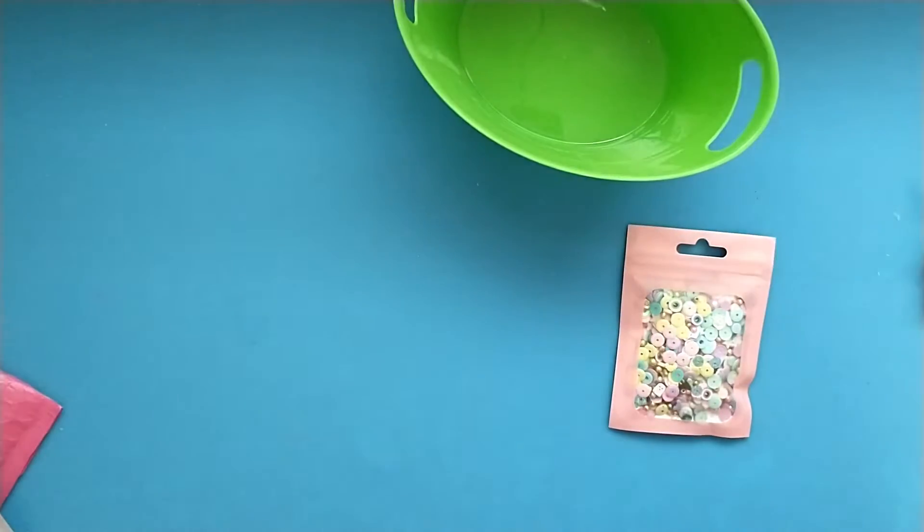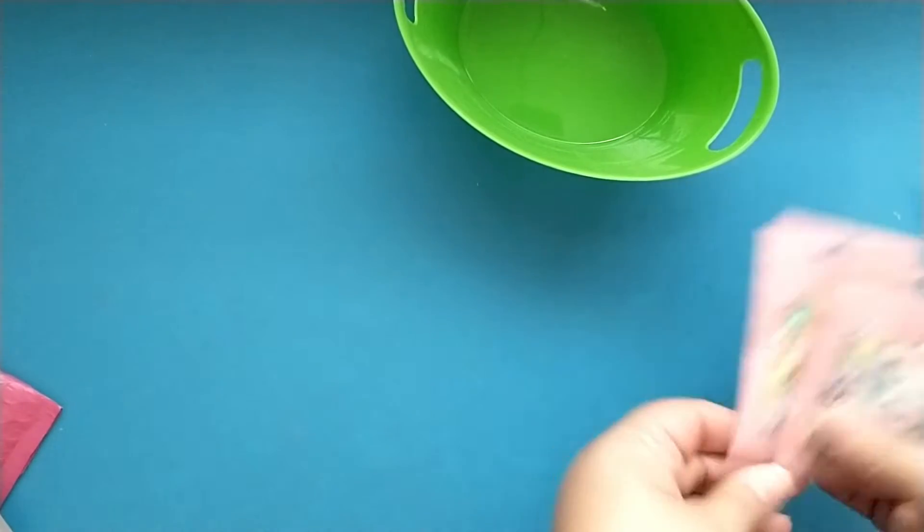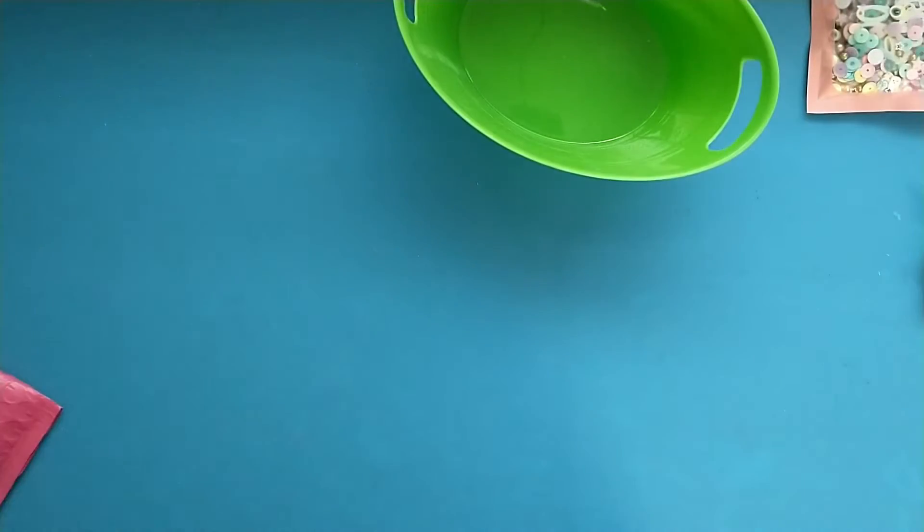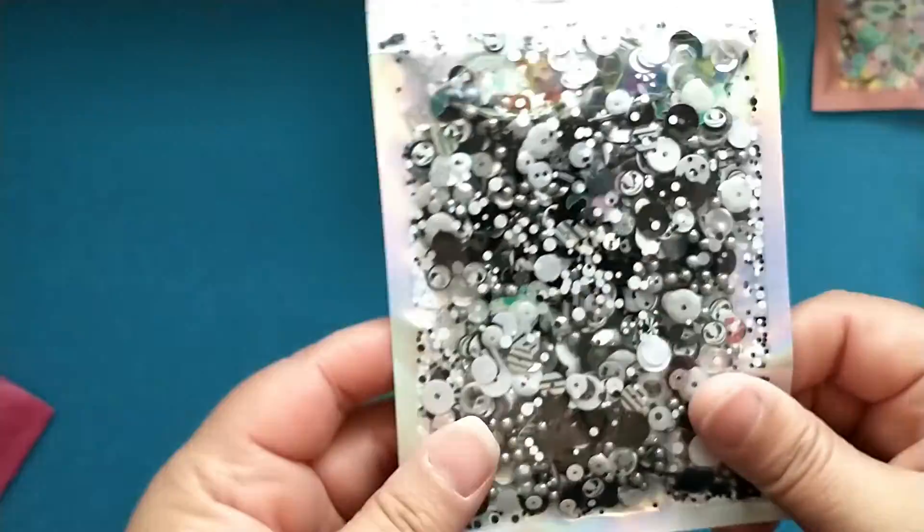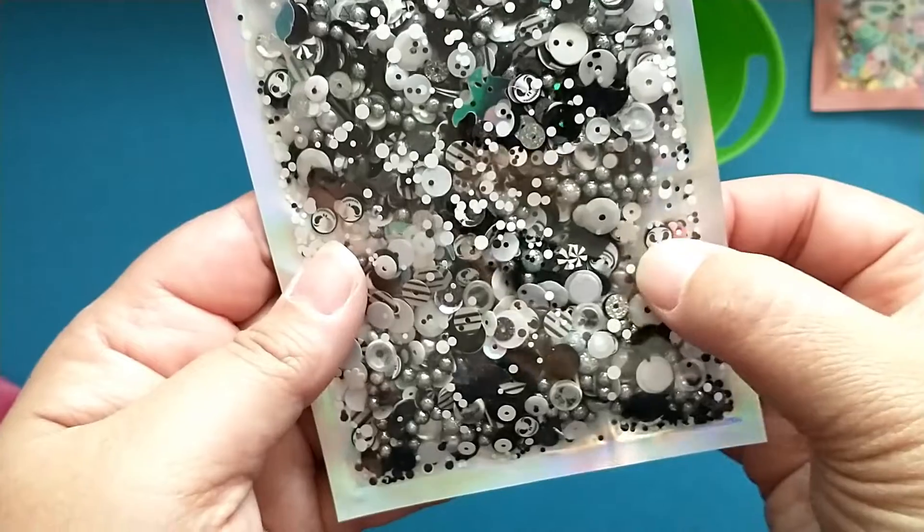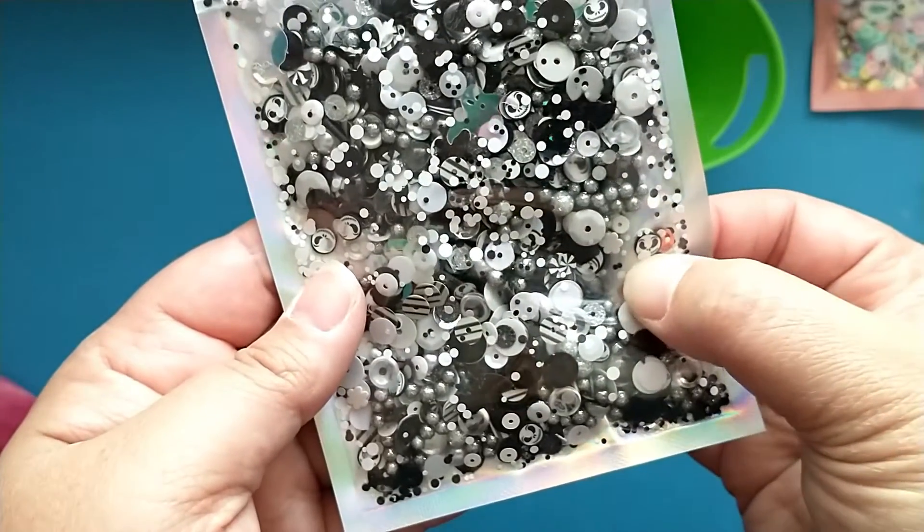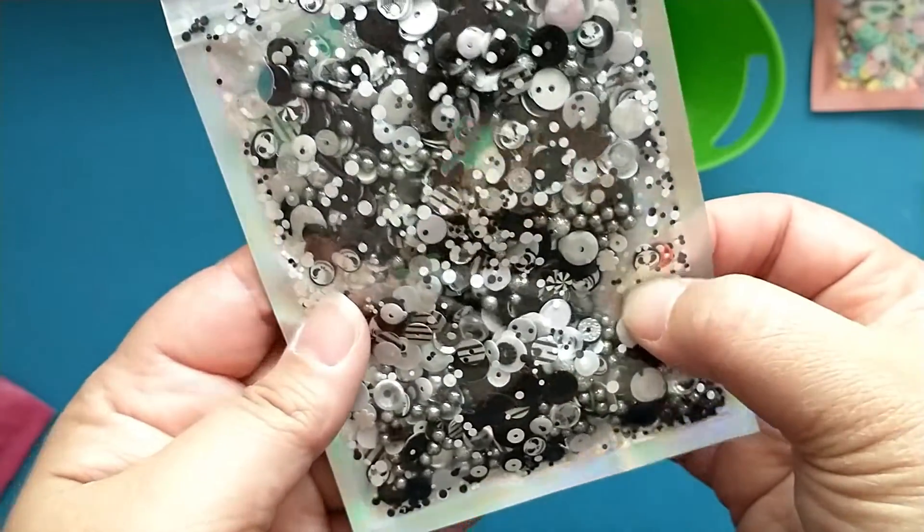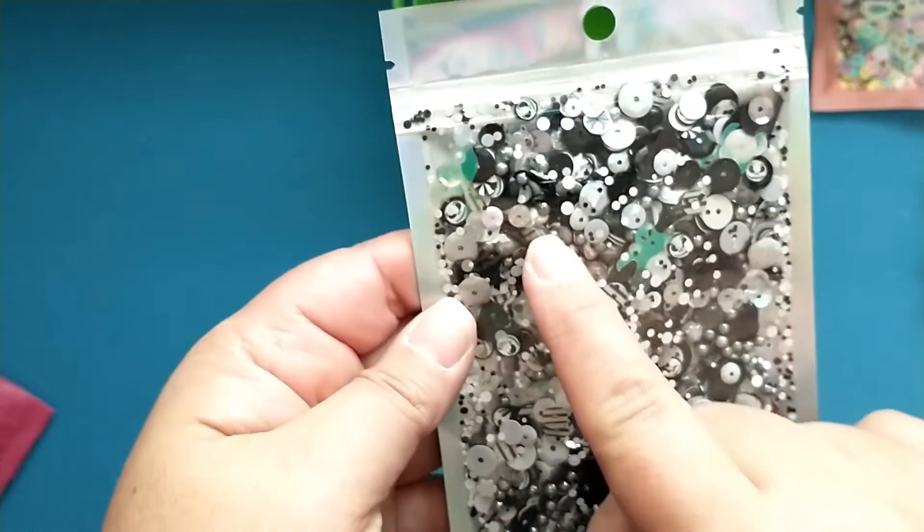So I purchased that one and then I also purchased this Jack Skellington one, which has the black and white sequins, the Jack Skellington clay bits, and some little silver balls.